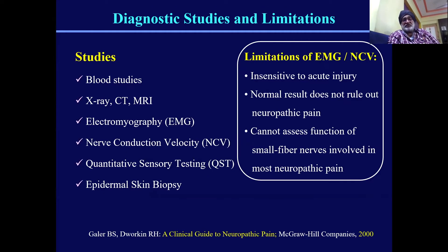There are certain diagnostic tests very useful for neuropathic pain apart from blood studies and X-ray, CT, and MRI — that is electromyography, nerve conduction velocity, and quantitative sensory testing. However, they have limitations: in acute injury, EMG and NCV have insensitivity, and you may not be able to rule out neuropathic pain even with a normal result. So it is very difficult to diagnose neuropathic pain in spite of all these tests.